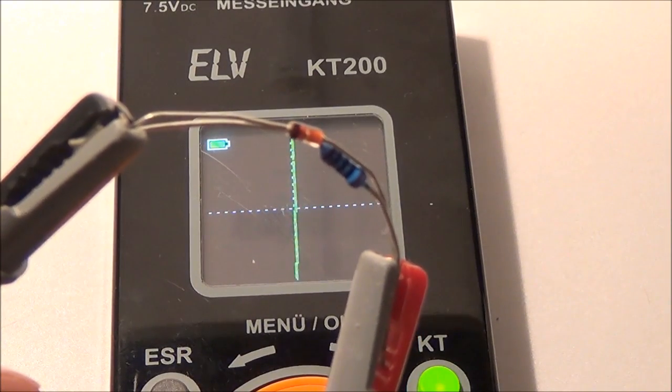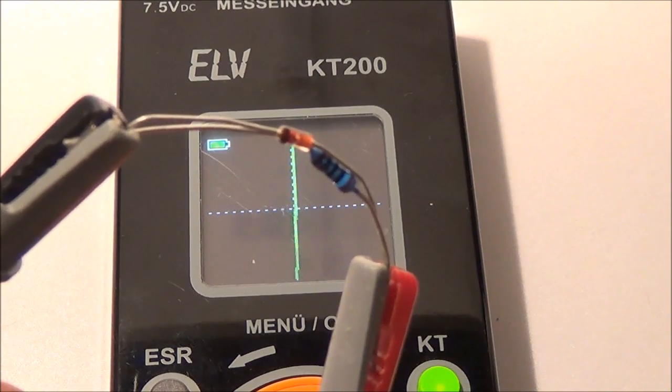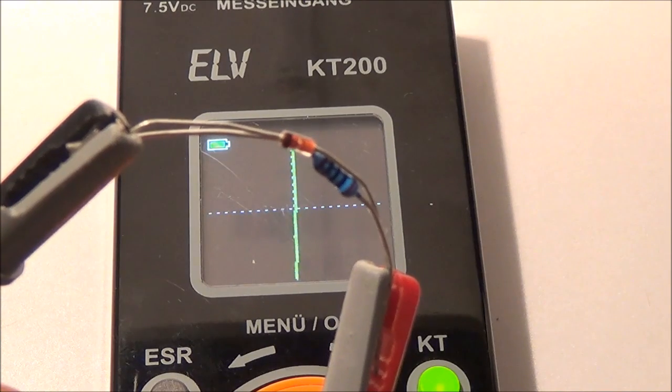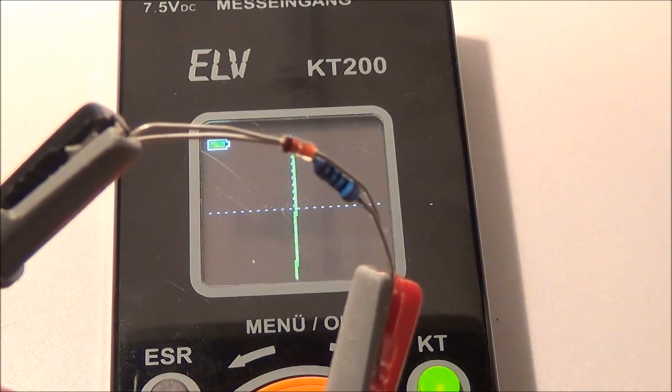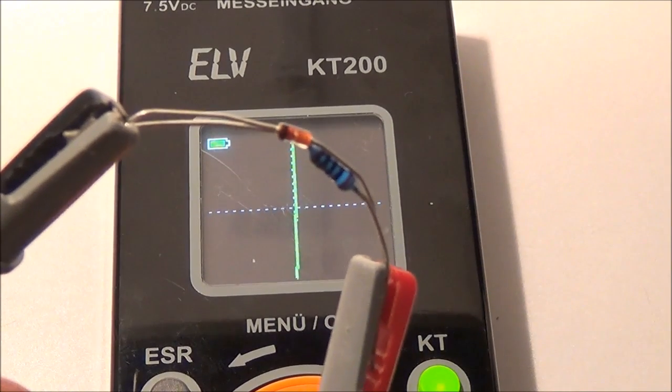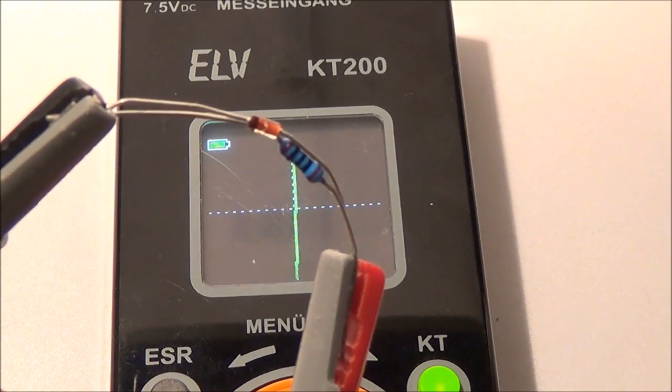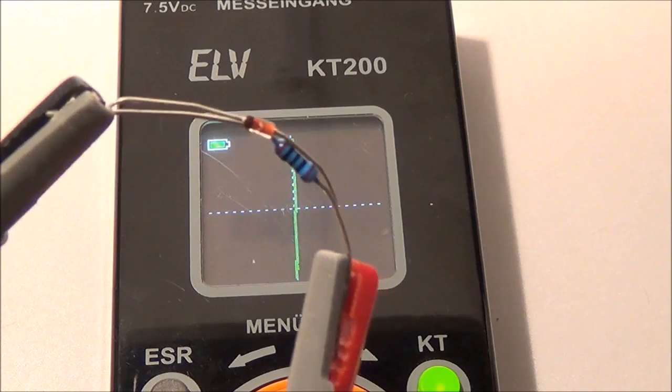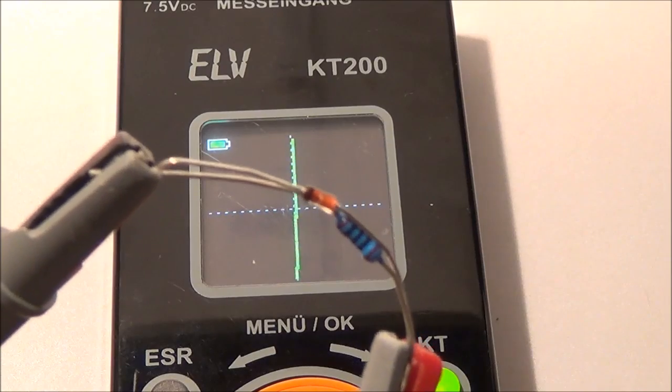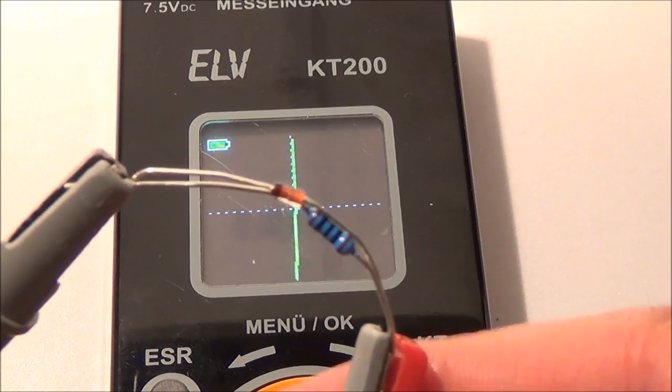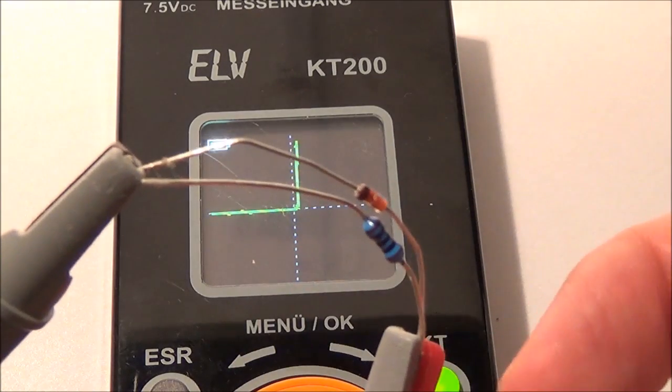This is a 100 ohm resistor in parallel with the diode. As you can see it looks almost like a dead short. Normally you're not going to have that low resistances shunting the junctions of your semiconductor, maybe except for like in power supplies. So again what you have to do is disconnect one end and then measure it again. Then it'll look like that if it's okay.